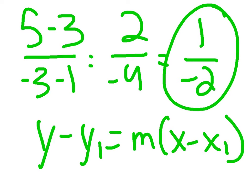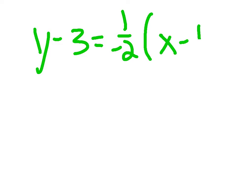We're going to use the point (1, 3) for this. So you're going to do y minus 3 equals negative 1 over 2, your slope, times x minus 1.